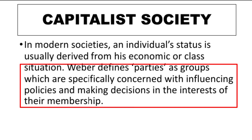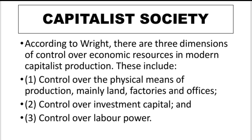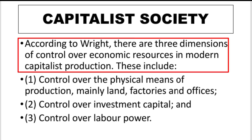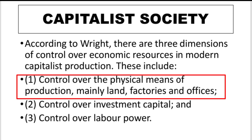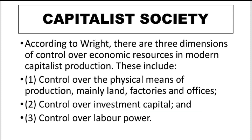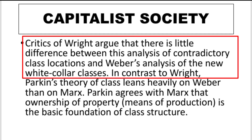Wright formulated the concept of capitalist economic control, which incorporates some ideas from Weber's theory. Wright identifies three dimensions to look at control over economic resources in modern capitalist production: first, control over the physical means of production including land, factories, and offices; second, control over investment and capital; third, control over the labor force. These three dimensions form the basis for identifying contemporary forms of class stratification.